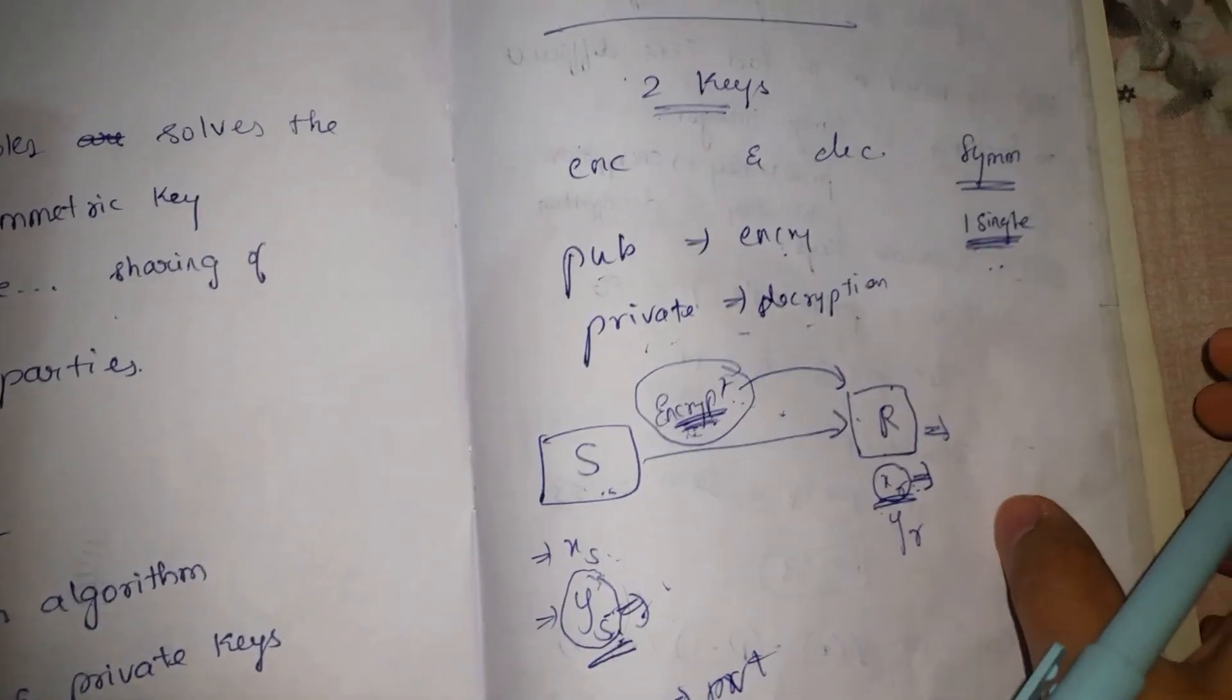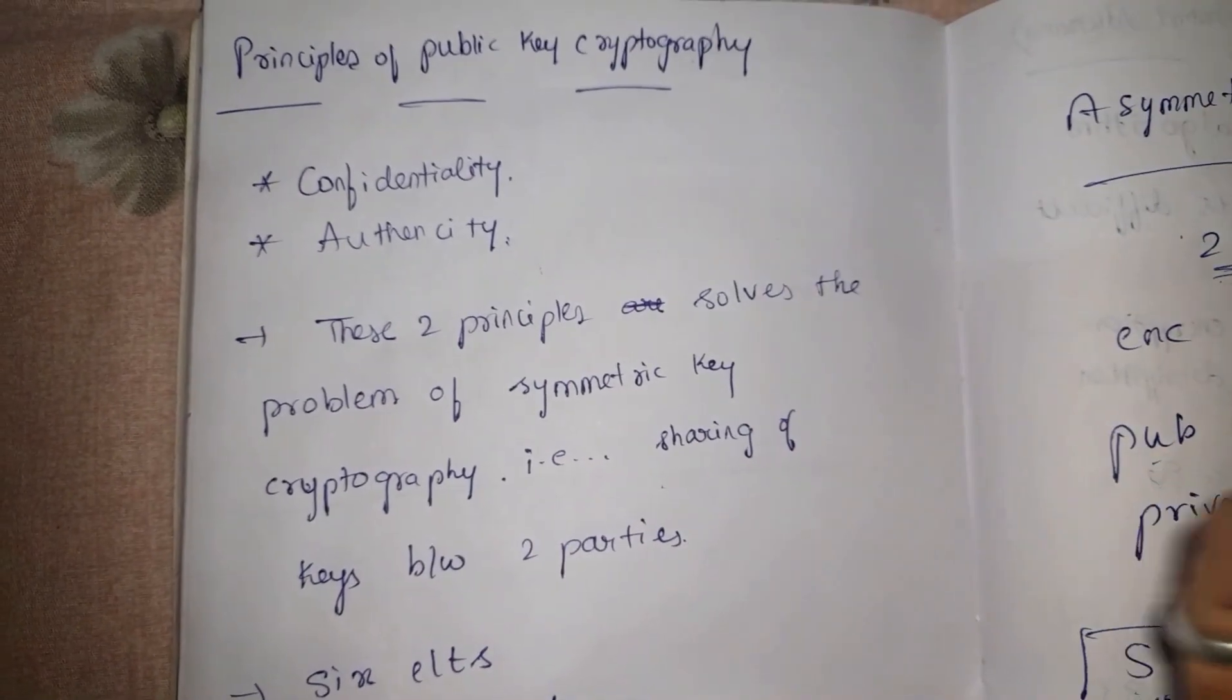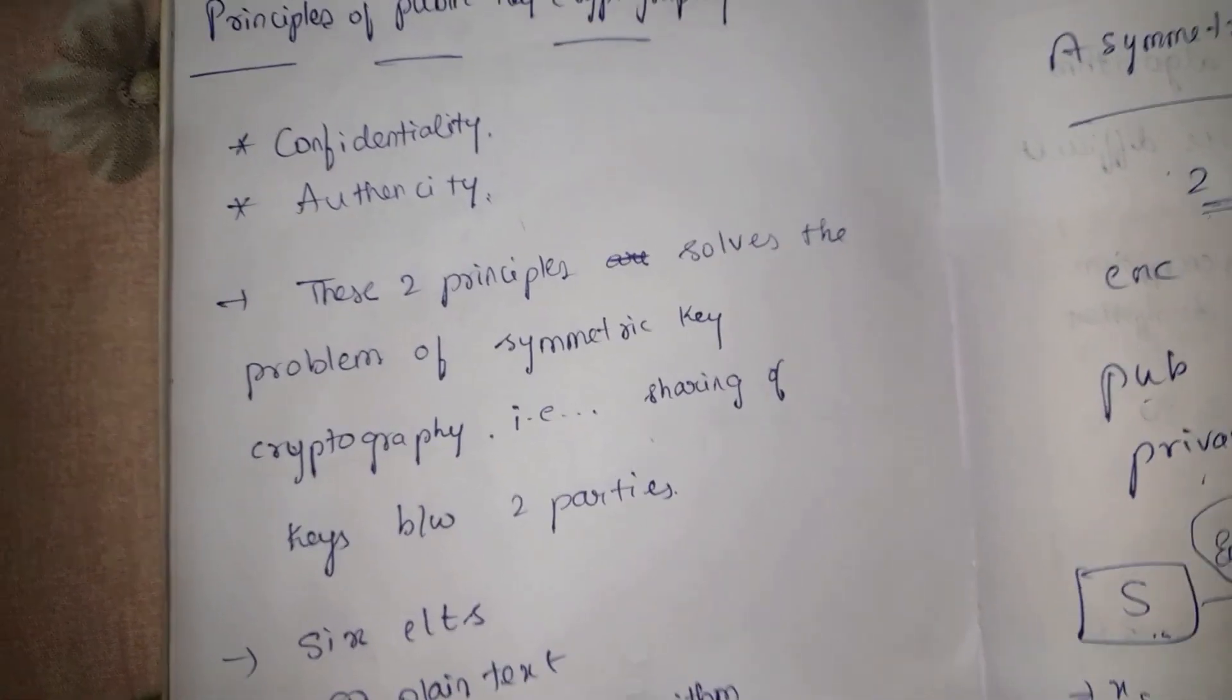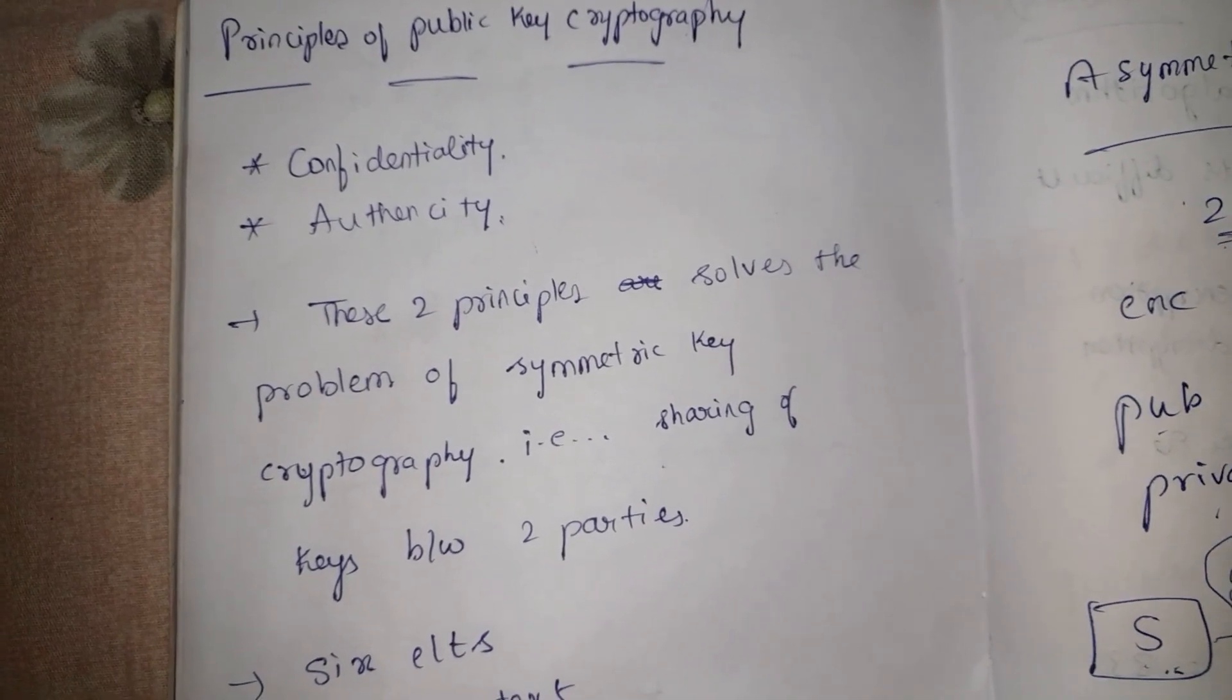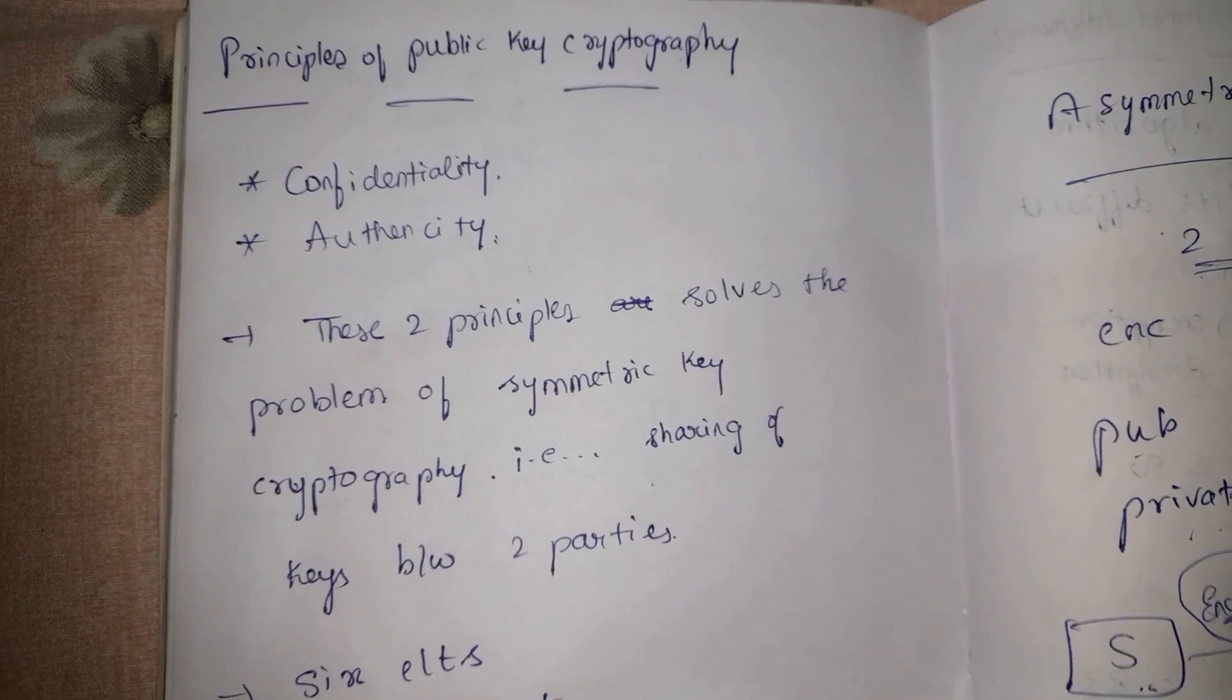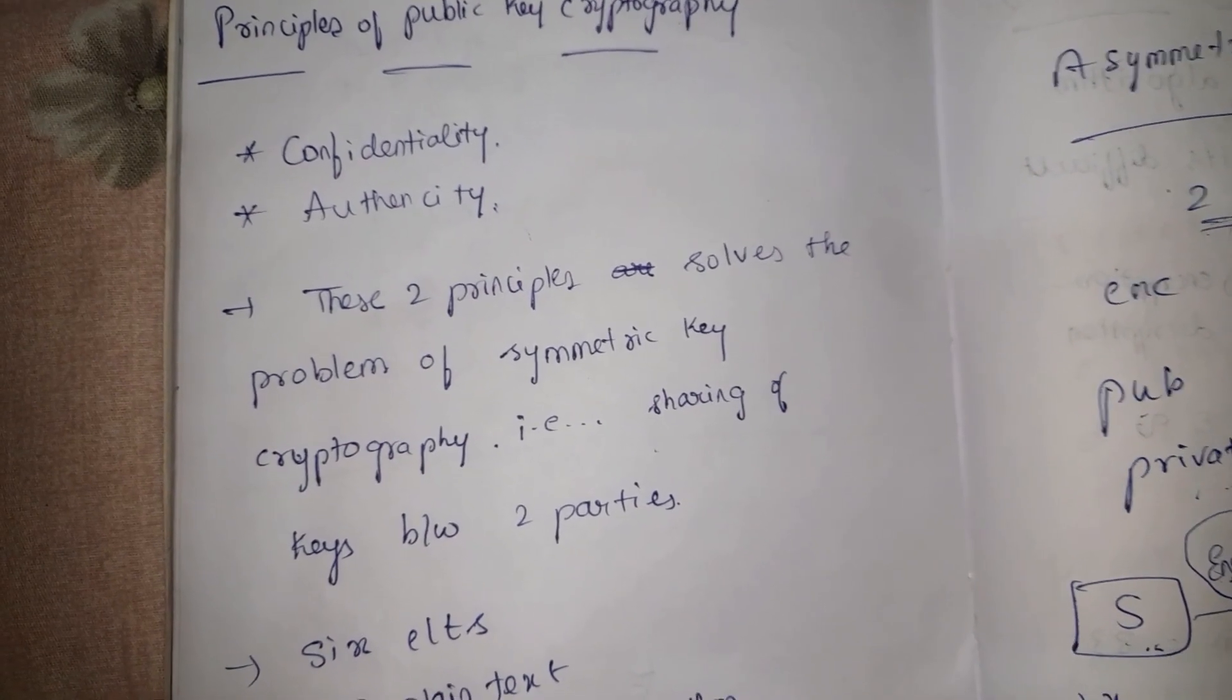Now let's try to understand the principles of public key cryptography. There are two principles of public key cryptography: one is confidentiality and another is authenticity. Confidentiality is keeping the information secret. Authenticity is the assurance for the receiver that the message has been received from the correct source.